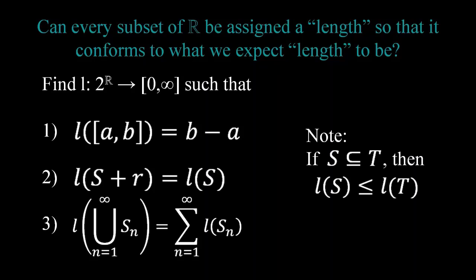So now we have only imposed three seemingly modest conditions. Do you think we can achieve what we want? Well, turns out the answer to this question is no. And now we will discuss an interesting set called the Vitali set for which no suitable length can be assigned without violating our requirements.